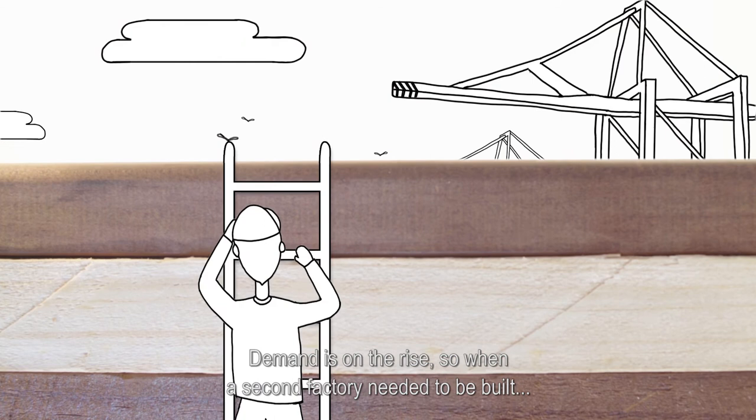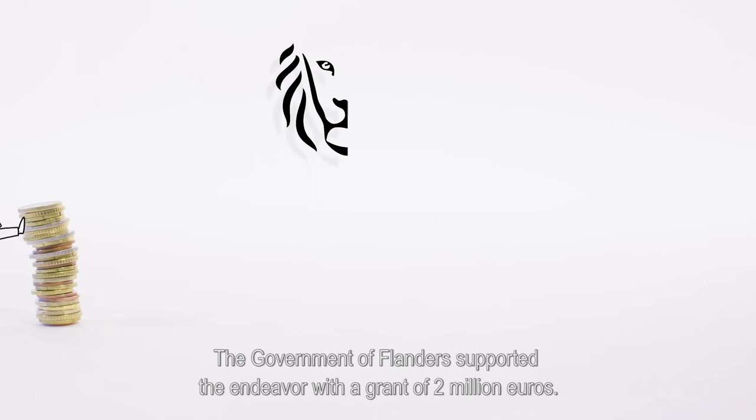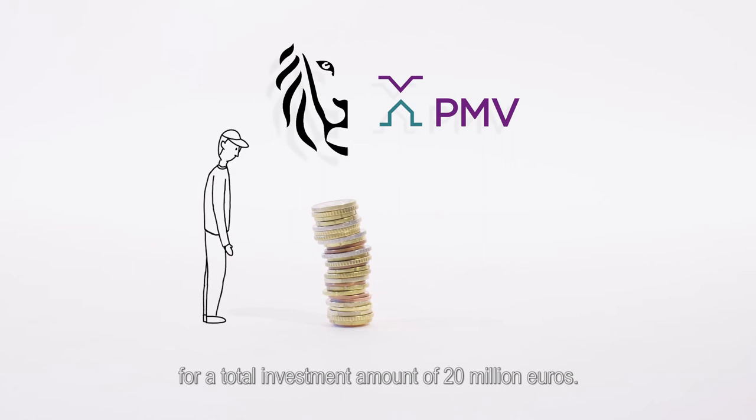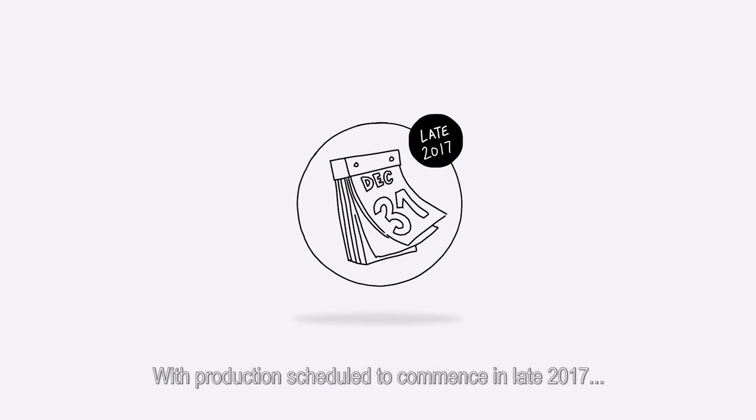Demand is on the rise, so when a second factory needed to be built, the Port of Antwerp proved to be the perfect location. The government of Flanders supported the endeavor with a grant of 2 million euros, and PMV invested an additional 10.7 million euros, for a total investment amount of 20 million euros.